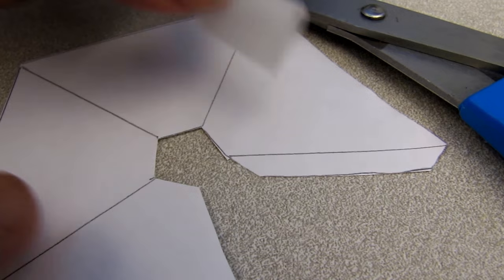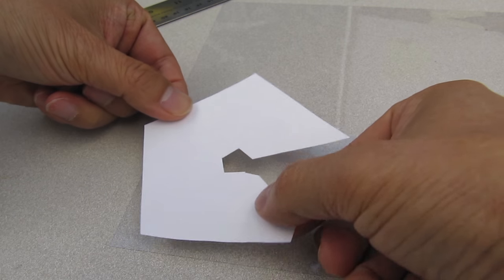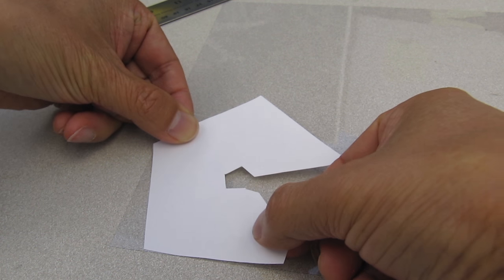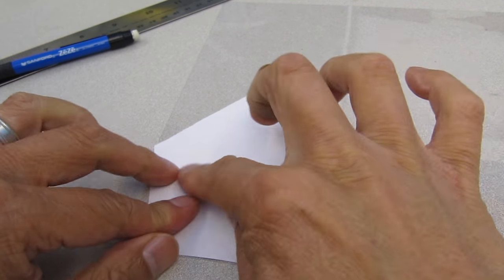When you have the template cut out, tape it onto the transparency paper with the lines facing down. Make sure you place the template on the edge of the film.